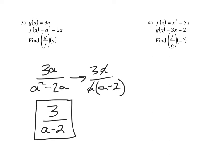Okay so let's look at number 4 now. We've got f of x is x cubed minus 5x and g of x is 3x plus 2. I want to take f, divide it by g, and then plug in negative 2. So f is going to go on top, x cubed minus 5x, and then 3x plus 2 goes on the bottom.